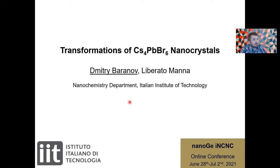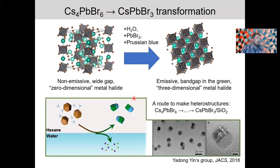So what is this transformation I'm going to talk about? Well, it's an interesting interconversion between non-emissive wide gap so-called zero-dimensional metal halide nanocrystals stimulated by chemical reagents to emissive lead halide perovskite nanocrystals. And such transformation has been used, for example, to produce perovskite-based nanoheterostructures, which is a very interesting research direction.